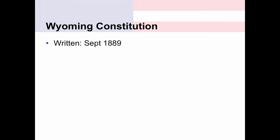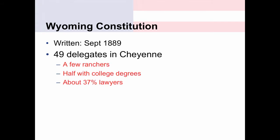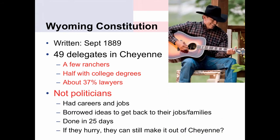The Constitution itself was written in September 1889. There were 49 delegates who met in Cheyenne to draft the Wyoming Constitution. A couple of them were ranchers, half had college degrees, and about 37 percent were lawyers — a pretty diverse group. Importantly, they were not politicians; they had jobs and careers, and one of the reasons they borrowed ideas was so they could get back to their families. They did not want to spend time reinventing the wheel, so they put it together in 25 days and then went home.